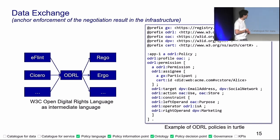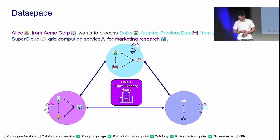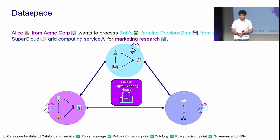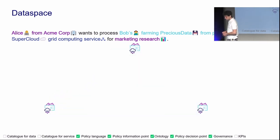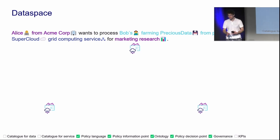We can translate this Turtle representation as a graph and compute the contract. Now we have another checkbox: policy language. We are getting closer to the end. Back to the scenario: we have the credential store, the ontology, we agree to the same rules, we have the policy negotiation. We need catalogues.